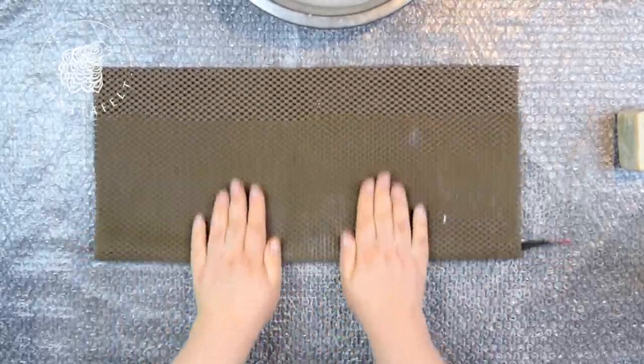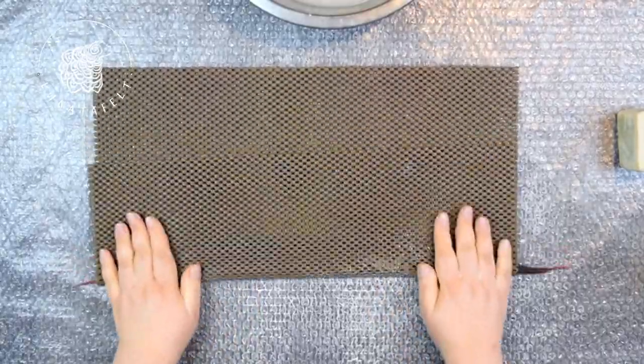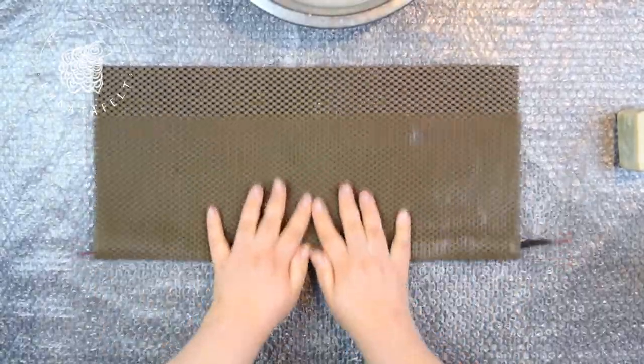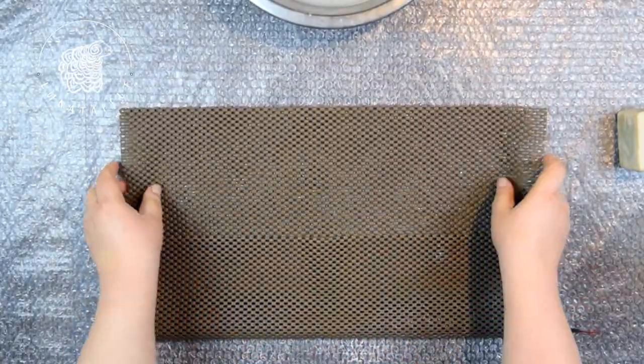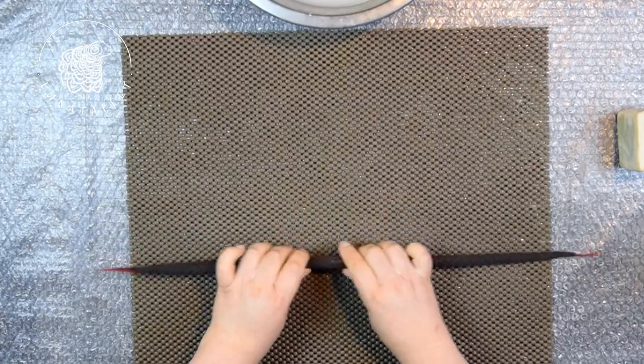Pay special attention to your hand movements during felting, especially when felting in the mat. Keep moving your hands from the middle to the ends, and vice versa, to ensure the cord felts evenly along its entire length.